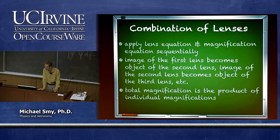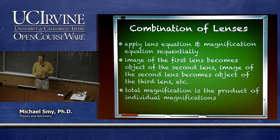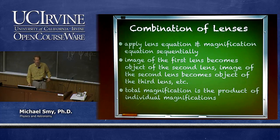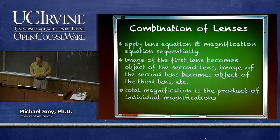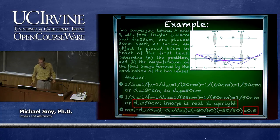For combinations of lenses, one applies the lens equation and magnification equation sequentially, one lens at a time. The image of the first lens becomes the object of the second lens, the image of the second becomes the object of the third, and so on. The total magnification is the product of the individual magnifications — it's basically no different from finding one image; we just repeatedly apply the same equation.